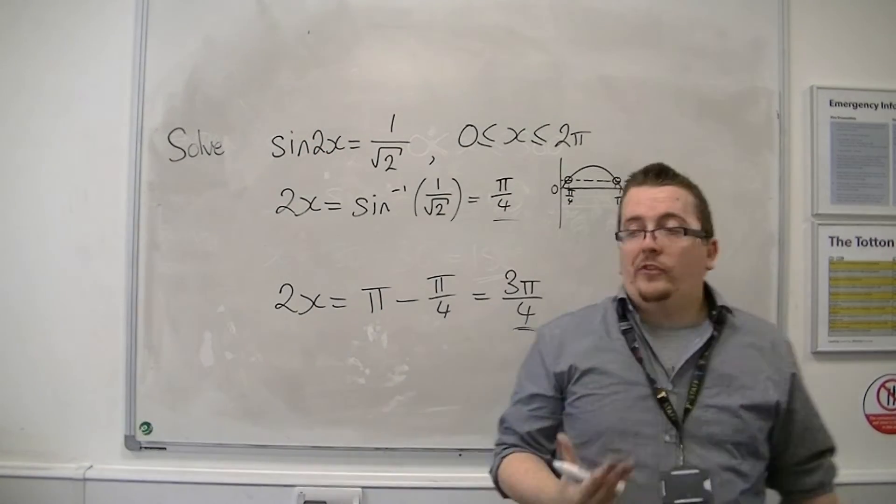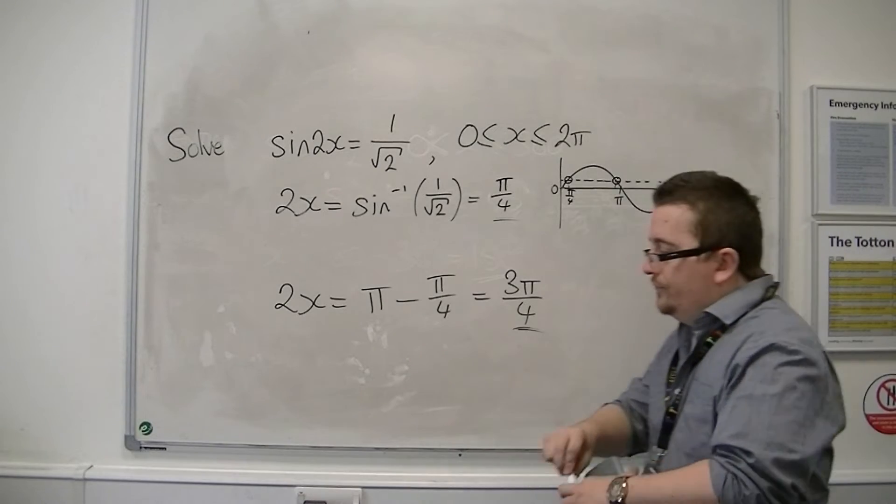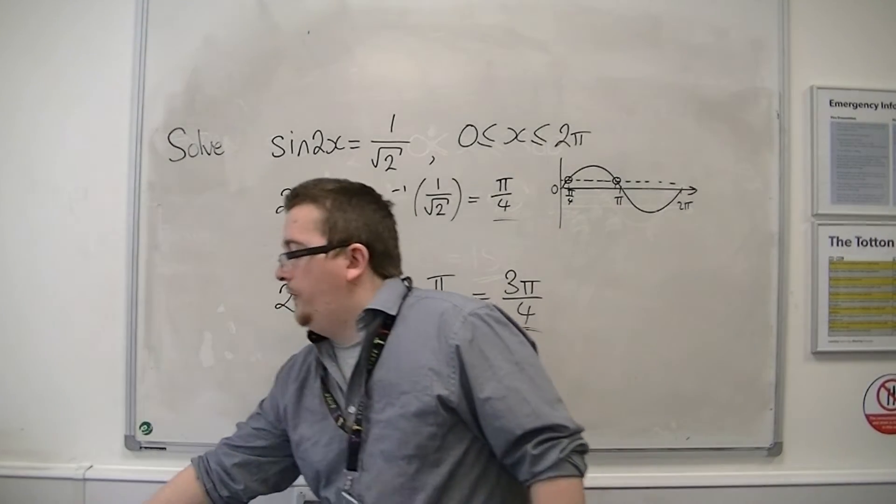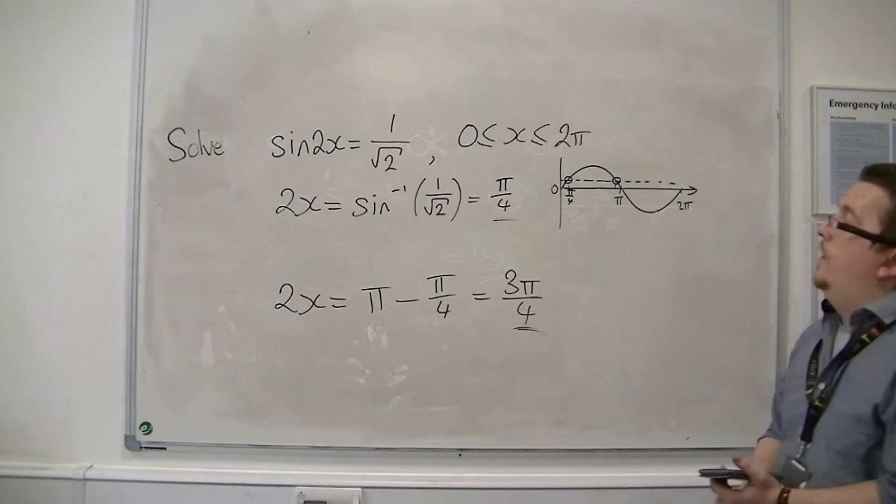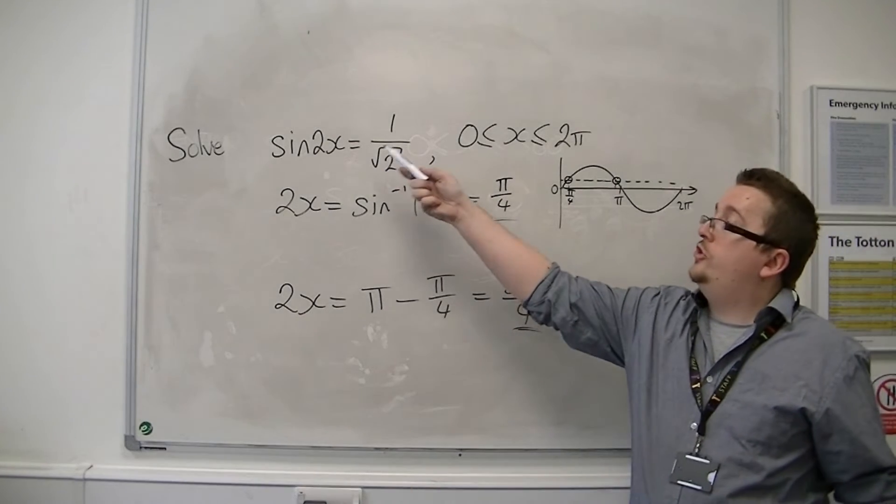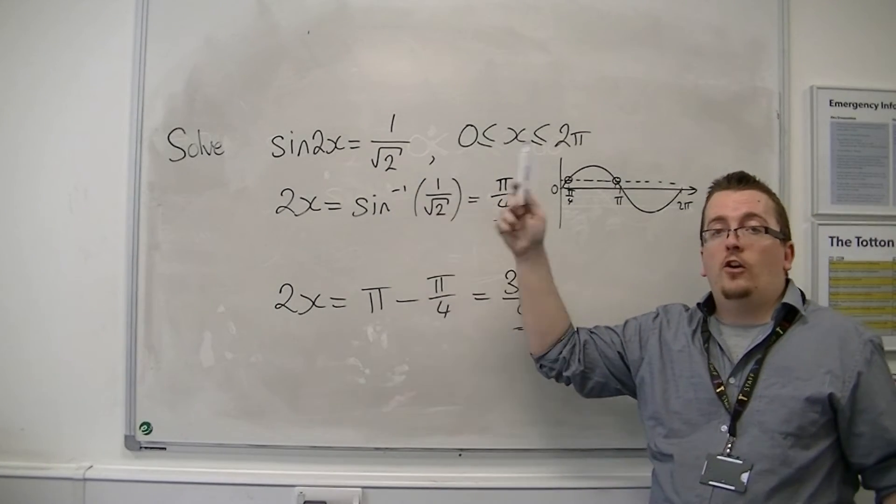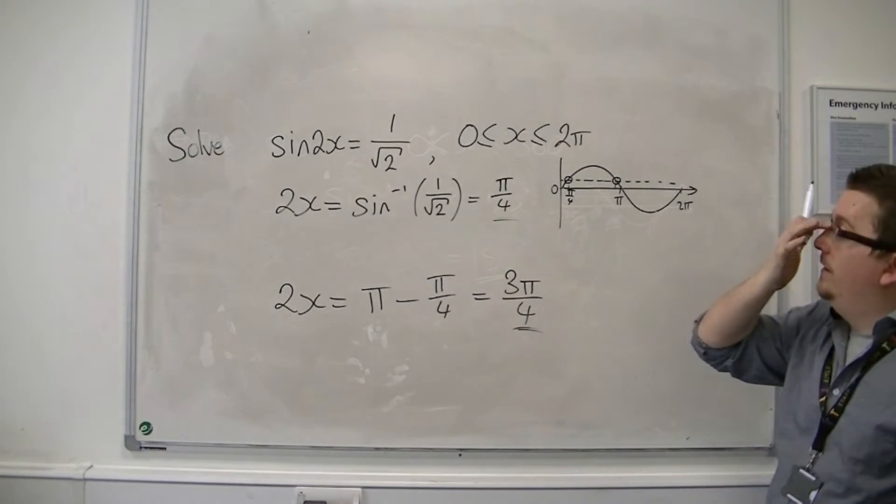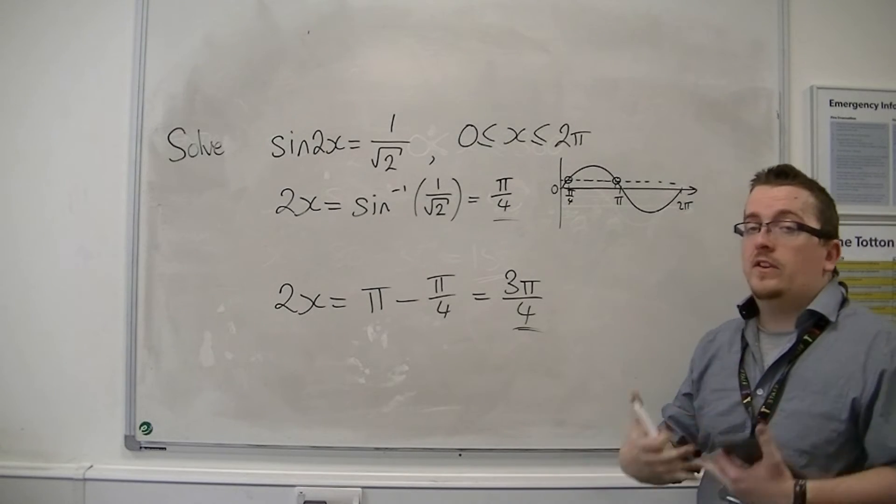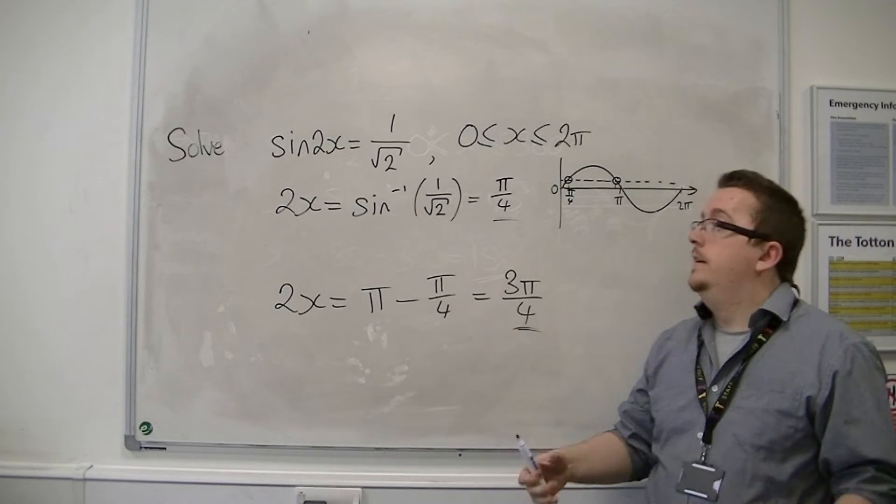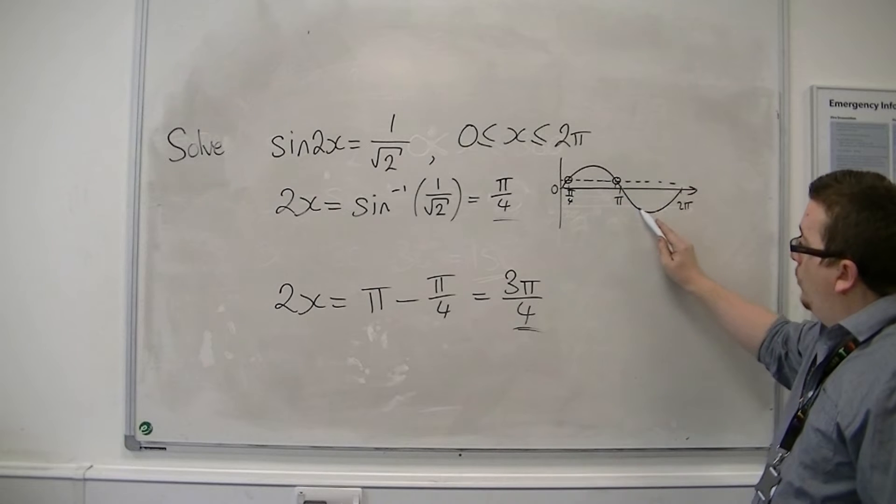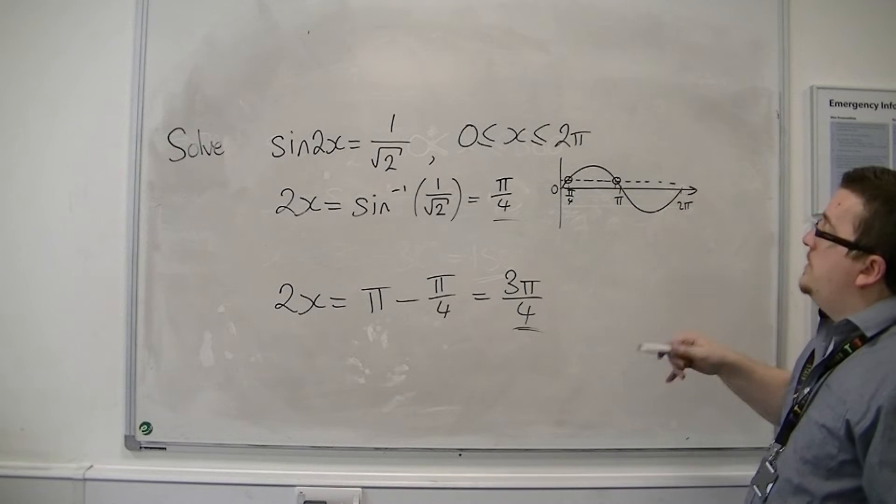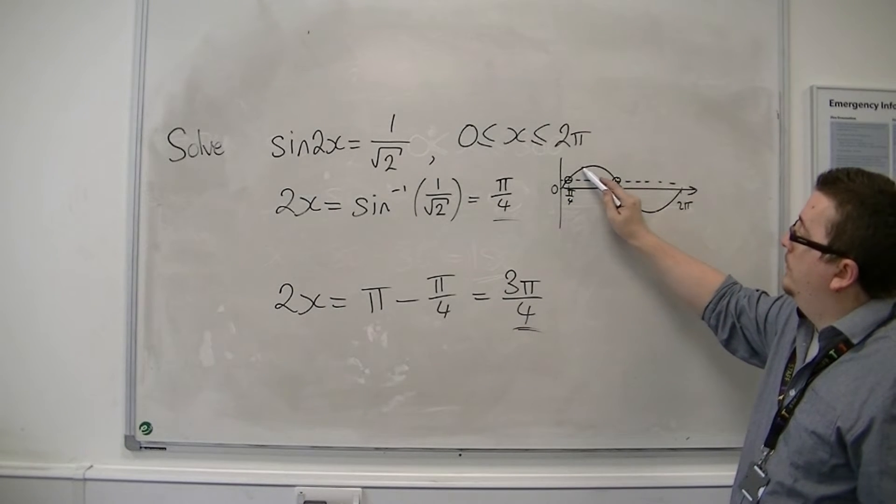But because I'm solving sin of 2x, I must take into account that what's happened is that this has been stretched by a factor of a half in the x direction. So instead of having a period of 2 pi, so 2 pi is what it is repeating over, it is now repeating over pi. So it's shrunk.